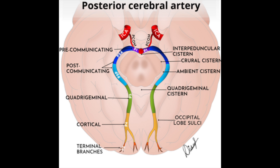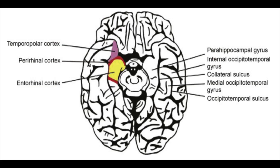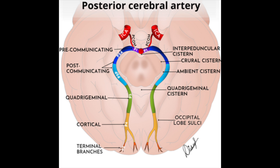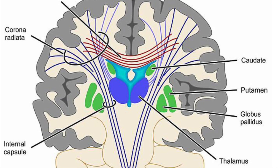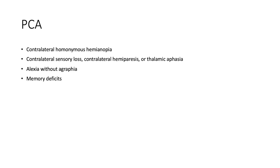Moving on to PCA infarcts: the posterior cerebral artery, or PCA, supplies the inferior and medial temporal and occipital cortices. The medial temporal lobe is important for declarative memory, and the occipital cortex is the visual processing center of the brain, containing most of the visual cortex. PCA infarcts typically cause a contralateral homonymous hemianopia. Smaller infarcts can cause smaller homonymous visual field defects. Sometimes the thalamus or posterior limb of the internal capsule are affected, causing contralateral sensory loss, contralateral hemiparesis, or even thalamic aphasia if the infarct is in the dominant, usually left hemisphere, thereby mimicking features of MCA infarcts.